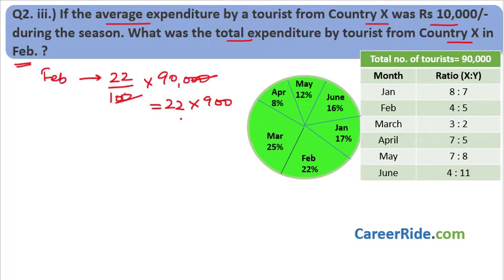So the total expenditure by tourists from country X in February is 8 crore 80 lakh rupees. Looking at those volumes, tourism definitely looks very lucrative! Jokes apart, this question is solved and it is pretty easy — nothing difficult. I hope all of you have understood it.